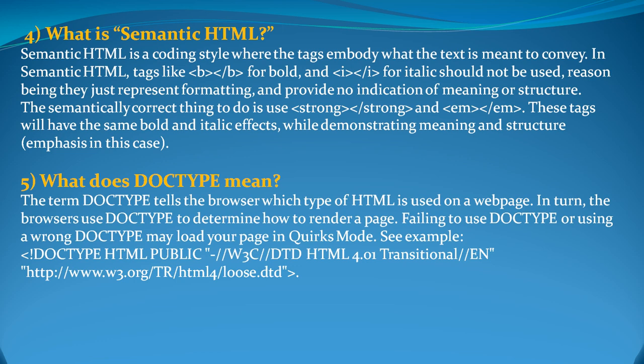What is semantic HTML? It is a coding style where the tag used is meant to convey meaning. For example, you have 'B' for bold, but the semantically correct thing to do is use 'strong' rather than 'B'. Similarly, 'I' is for italic but the semantically correct tag is 'EM'. These tags will have the same bold and italic visual effect despite the different tag names used. The effect and output remain the same, while also demonstrating meaning and structure — that is what semantic HTML means.